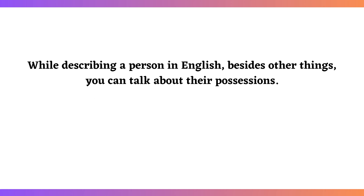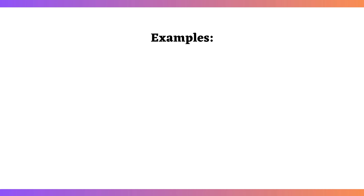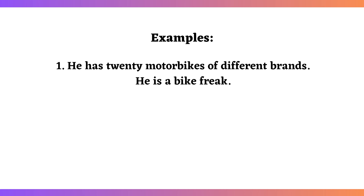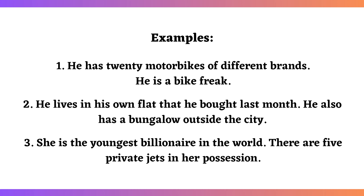Describing possessions of a person: while describing a person in English, besides other things, you can talk about their possessions — especially when someone has a rare collection or extraordinary possession. Examples: He has 20 motorbikes of different brands — he is a bike freak. He lives in his own flat that he bought last month, and he also has a bungalow outside the city. She is the youngest billionaire in the world — there are five private jets in her possession.